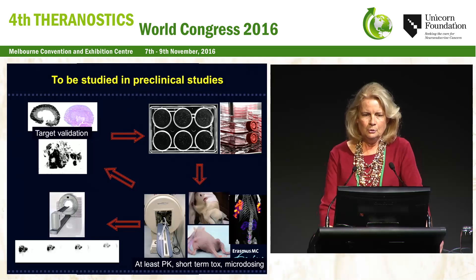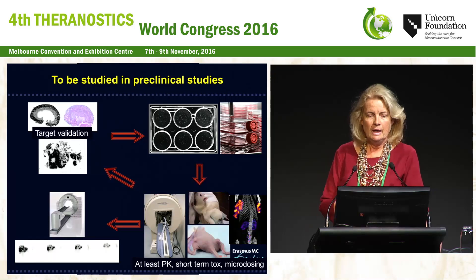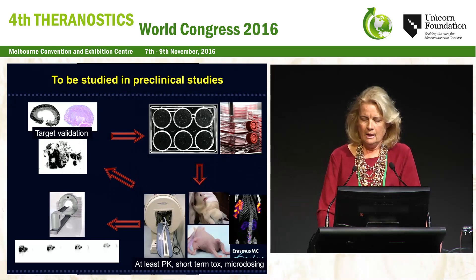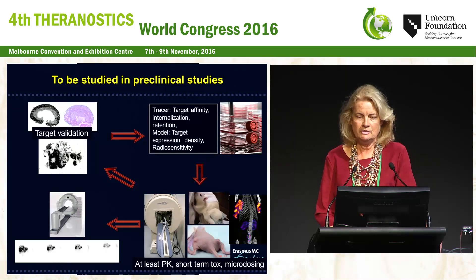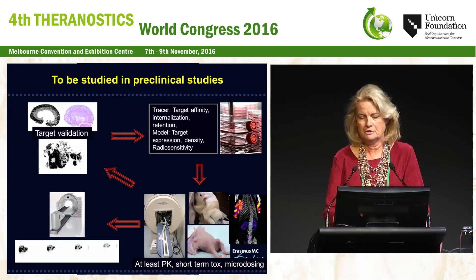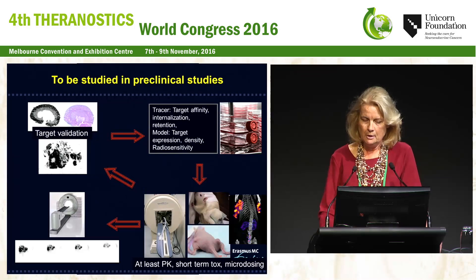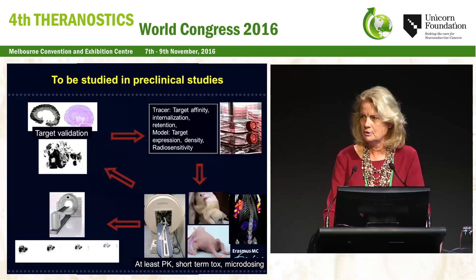What we study in preclinical studies is a cycle of research. We start with target validation and binding of the tracer, most often done on tissue sections of human material using autoradiography studies to test affinity for the receptor. Then we move to in vitro studies in cells, where we can test target affinity, internalization, and retention properties, as well as target expression density and radio sensitivity for radionuclide therapy studies. If all is favorable, we start in vivo studies in small animals to get information on pharmacokinetics and short-term toxicity according to the microdosing principle, and then start clinical studies.